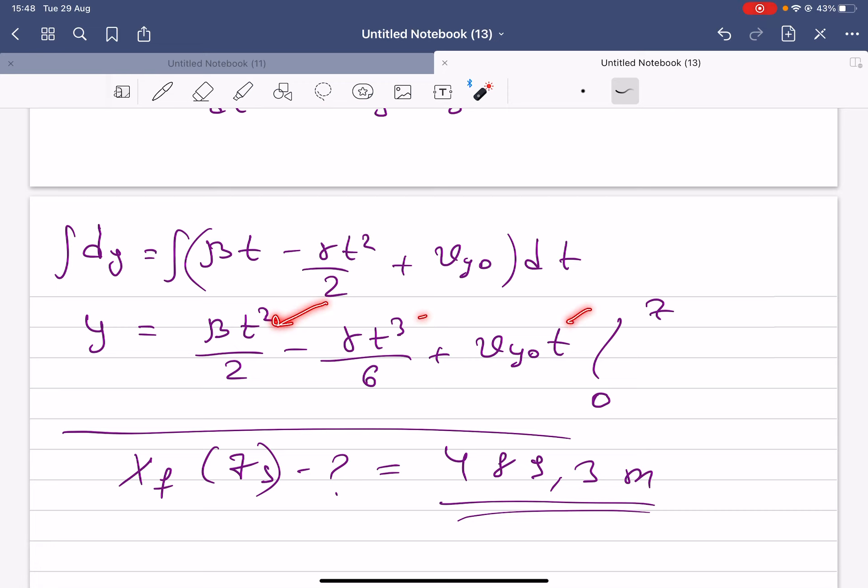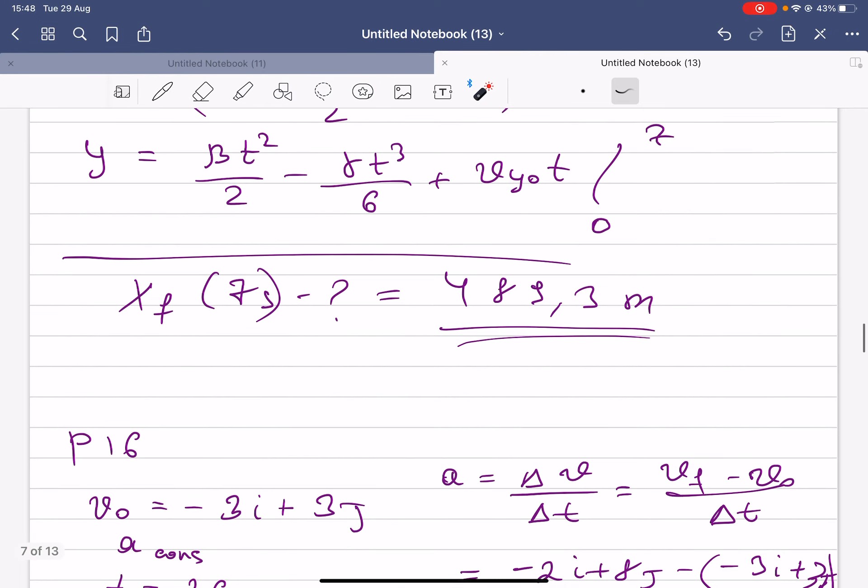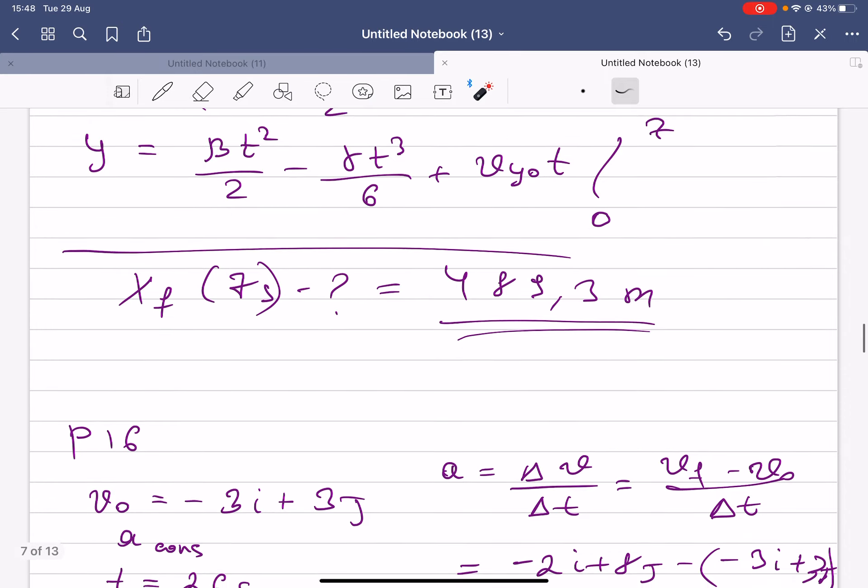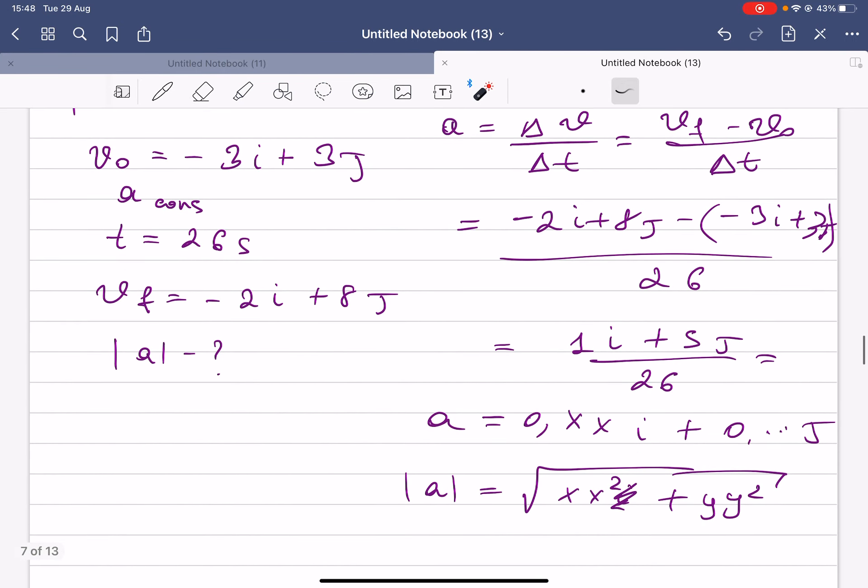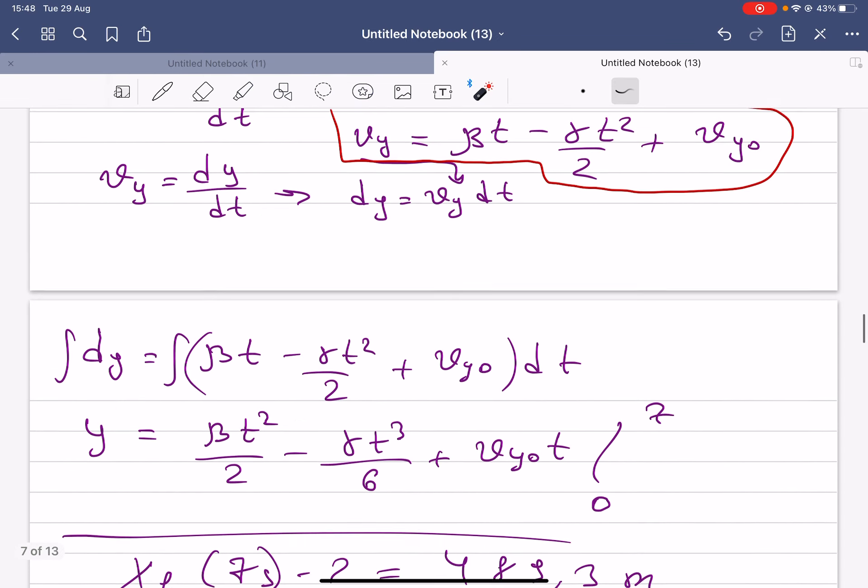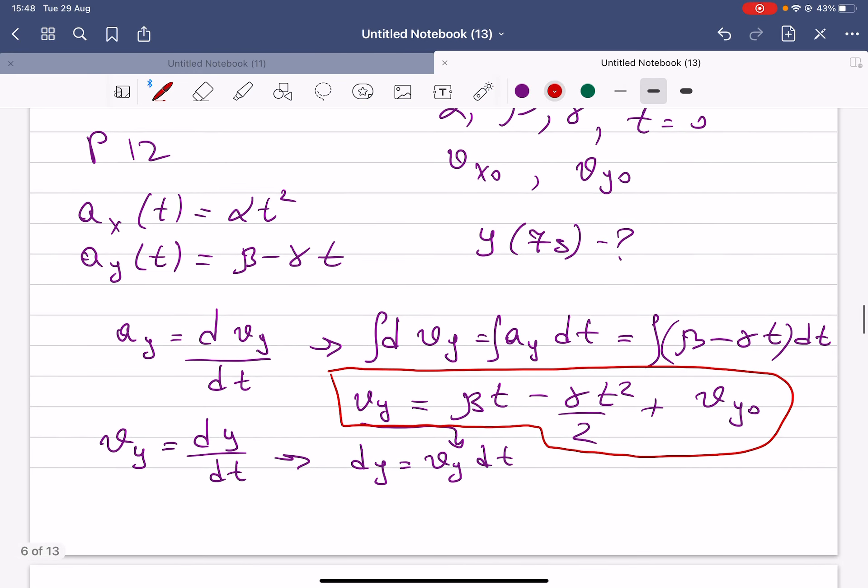Since we know that the time is from zero till seven, we have to plug seven seconds into time for each one, and then we can get the final answer. Now basically, you can also do the same things if you want to calculate x final at seven seconds.